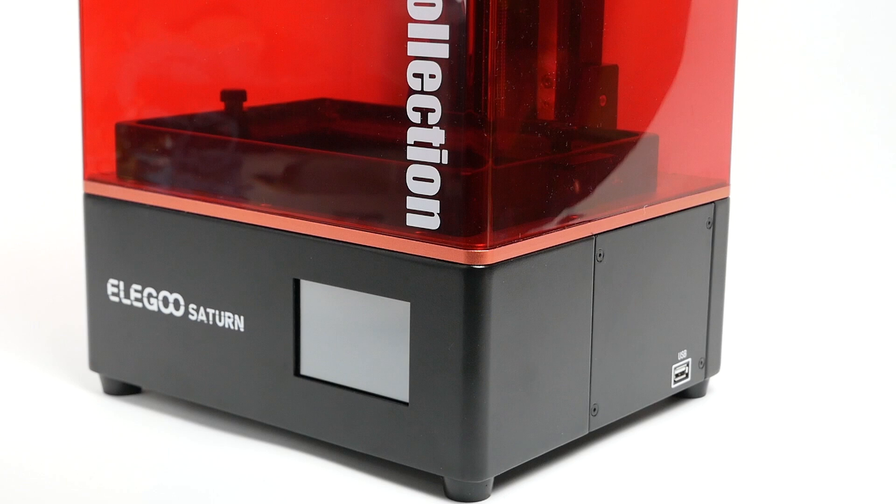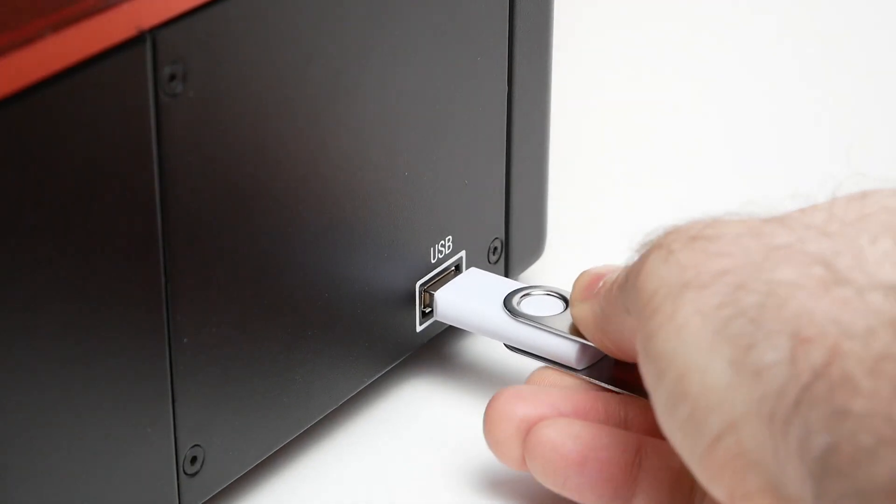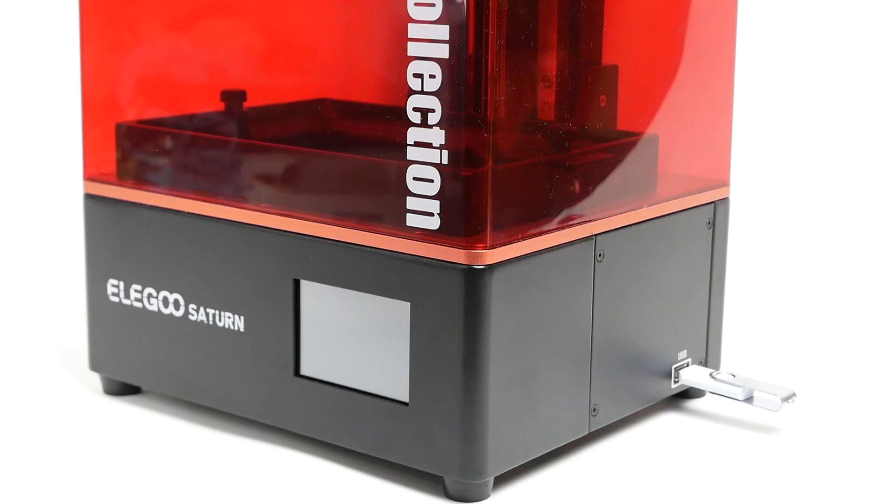One minor difference between the Saturn and my other resin 3D printers is that it has the USB port on the side. That's where you plug in your memory stick. That's better than it being on the back as it is on some of my other printers, but I'd rather have it be on the front because this way you can't put multiple printers side by side.